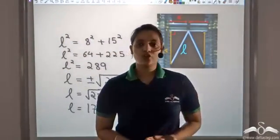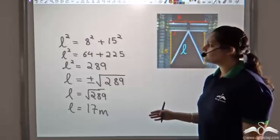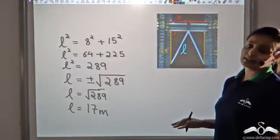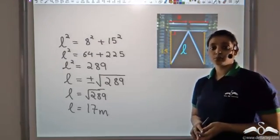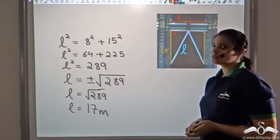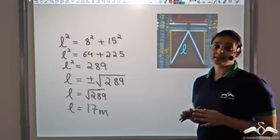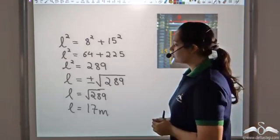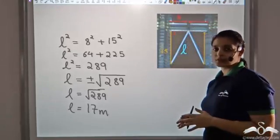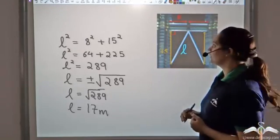The Pythagorean theorem is unique in that it has been proved in many different ways over the years. In fact, there is a book called the Pythagorean Proposition that contains almost 367 different proofs. Now let's try to prove this theorem using what we have studied so far.